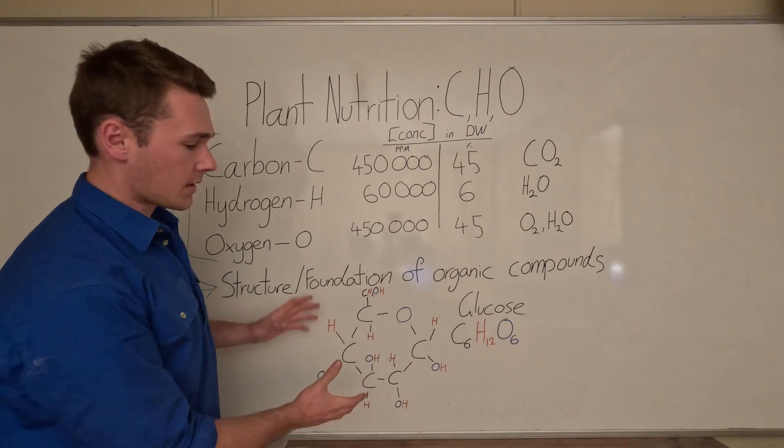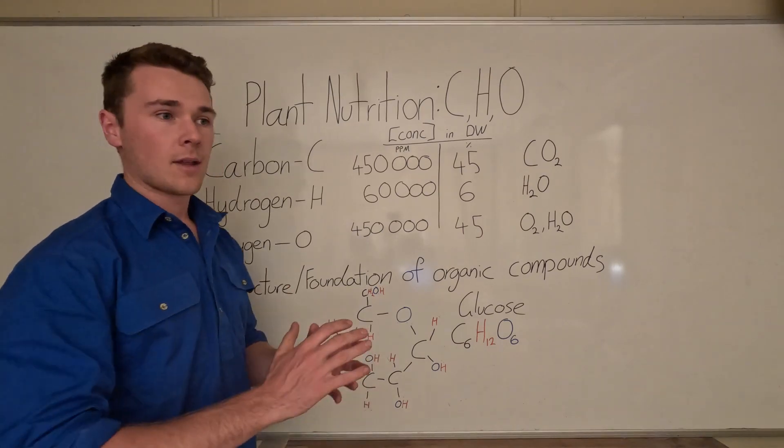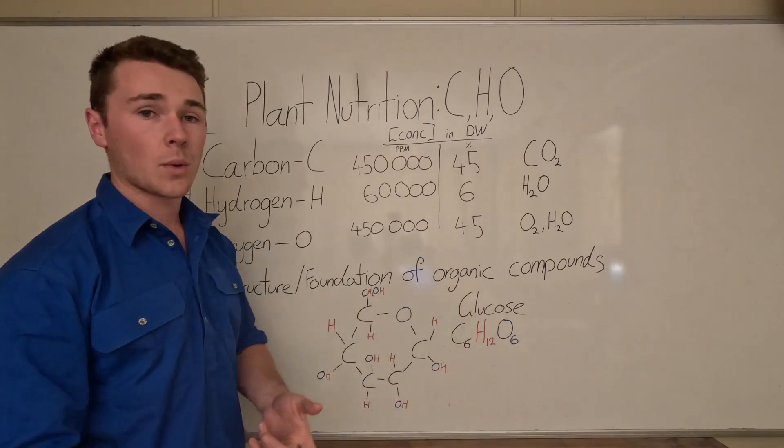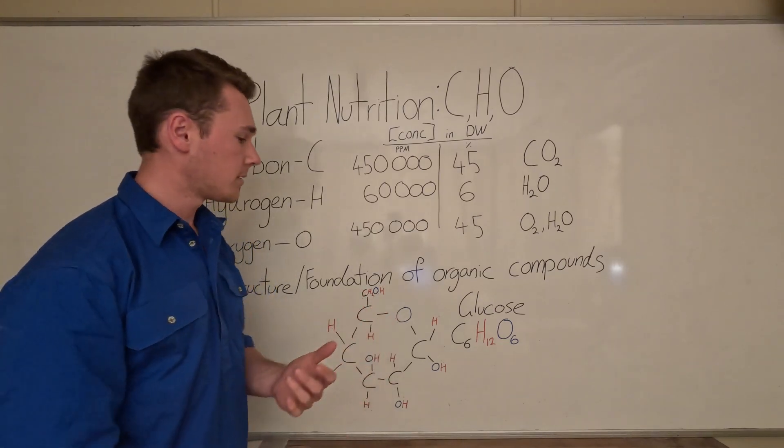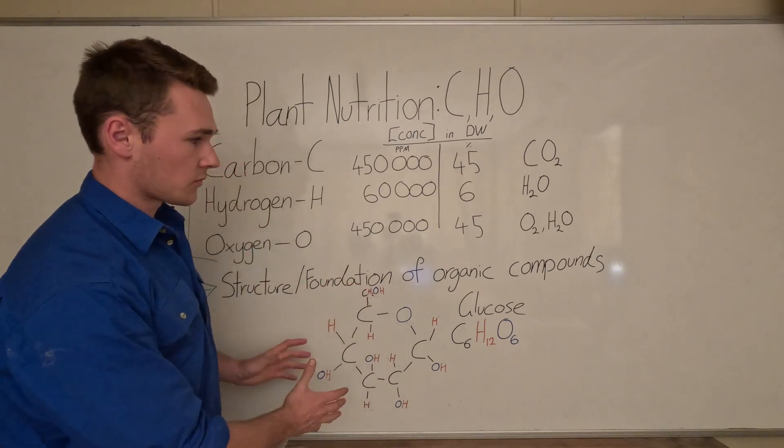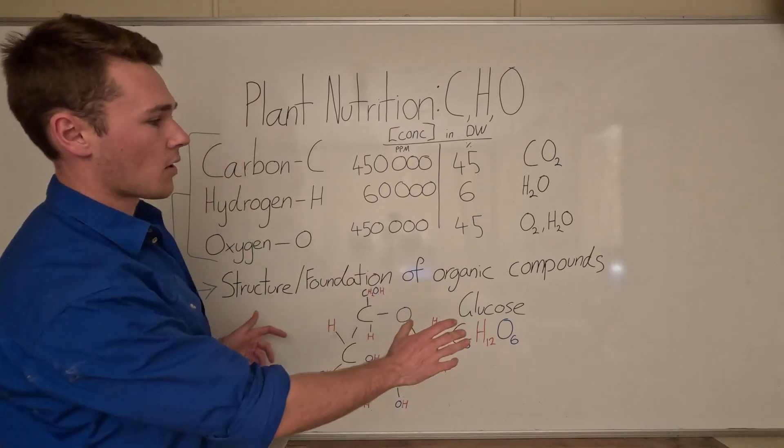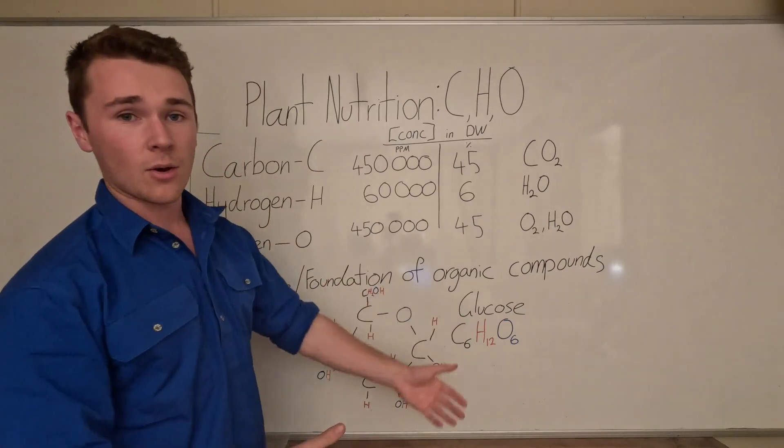So from here, the plant really takes this compound and then builds out other compounds, whether it be amino acids which eventually get turned into proteins, or cellulose or lignin. It all comes from glucose and it all comes from carbon, hydrogen, and oxygen.